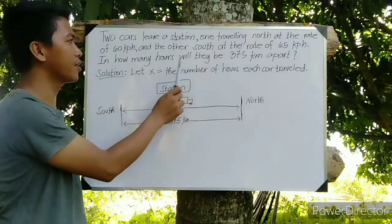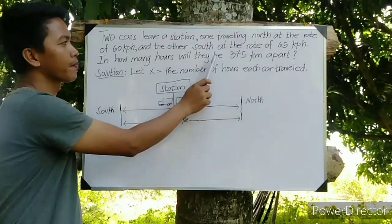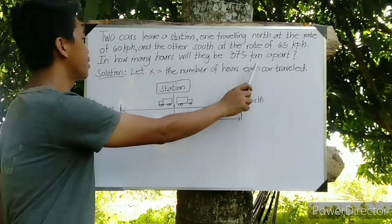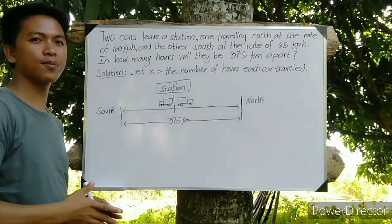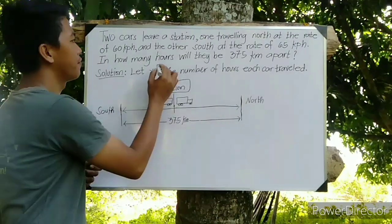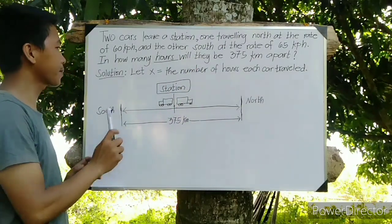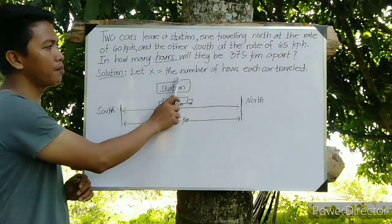In how many hours will they be 375 kilometers apart? In this problem, since the question is about number of hours, we have here in our solution: Let X be the number of hours each car traveled.